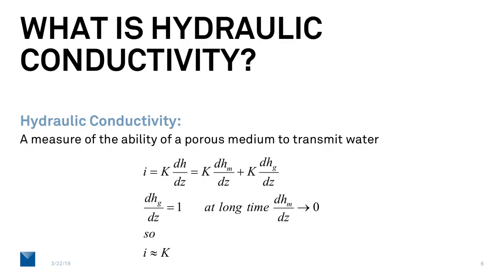Let's start out just by talking about what hydraulic conductivity is. It's a measure of the ability of a porous medium to transmit water. If we let i indicate the water flux, the amount of water per unit area per unit time, we can say that that's equal to K, a hydraulic conductivity, multiplied by the gradient in head dh/dz.